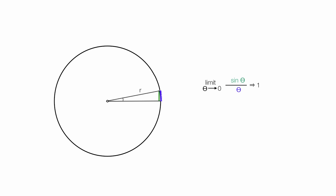With a very small theta, I see that the opposite side, the green side, and the arc length are just about the same length. That means the ratio of sine theta divided by theta is also one or is approaching one. And there you have it.